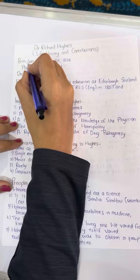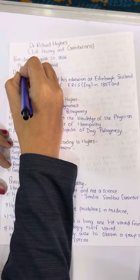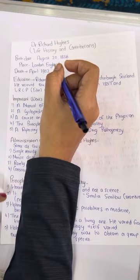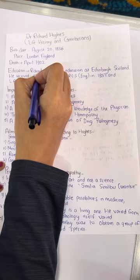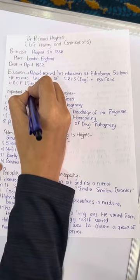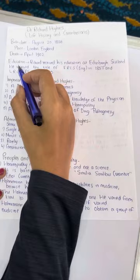What is the birth date? It is August 20, 1836. What was the place where Richard Hughes was born? It is in London, England. What is the death anniversary? It is April 1902. What was the education? Richard received his education at Edinburgh, Scotland. He received the title of FRCS in England in 1857 and LRCP in Edinburgh in 1860. These were the educational qualifications of Dr. Richard Hughes.